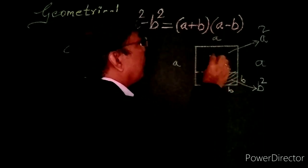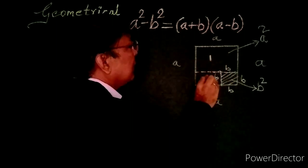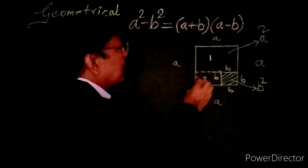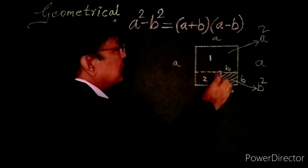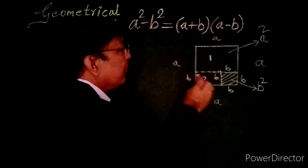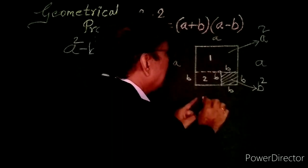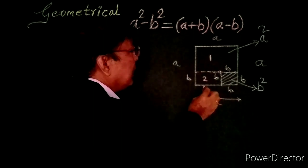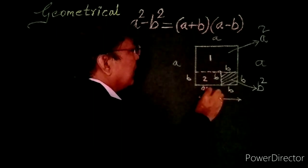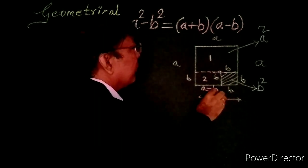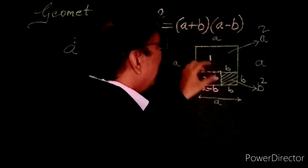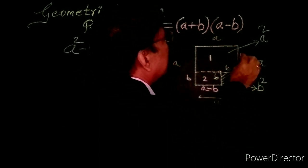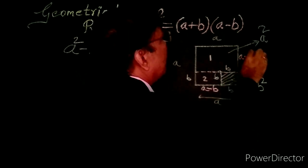This is the first rectangle and this is the second rectangle. What are the sides of this rectangle? This side is b, means this is also b, and this is totally a. From a, b quantity is subtracted, means this quantity is a minus b. Here a, and this quantity is b, and this length is a minus b.